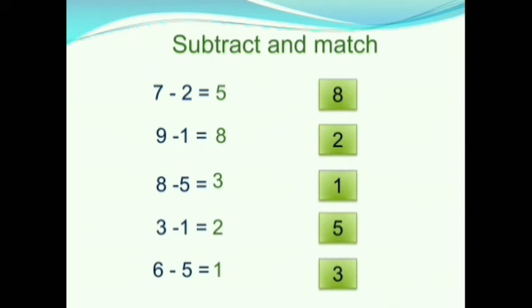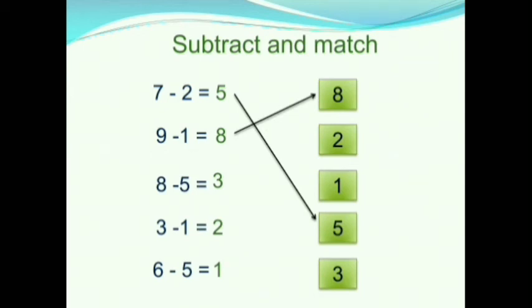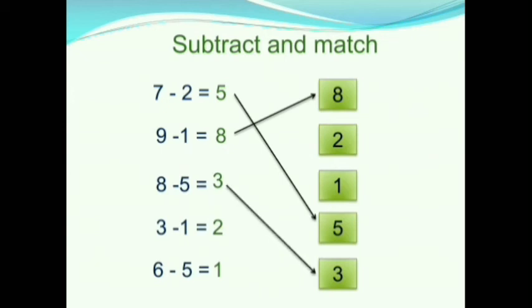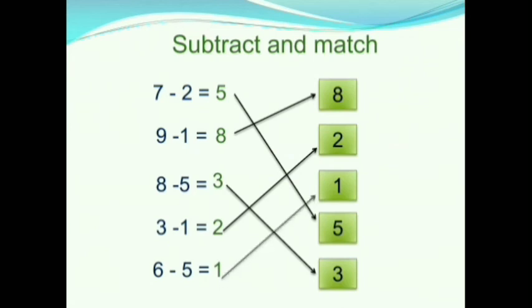The first answer is 5. In the right side, where is 5? Yes, it is here. So we will match these two numbers. In the second one, the answer is 8. In the right side, where is it? Yes, it is here, so we will match these two. In the third one, the answer is 3. In the right side, where is 3? Yes, it is here, so we will match these two. In the fourth one, the answer is 2. In the right side, where is 2? Yes, it is here, so we will match. In the fifth one, the answer is 1. In the right side, where is 1? Yes, it is here, so we will match these two numbers.